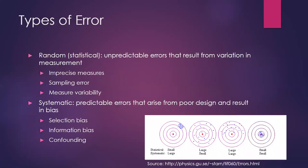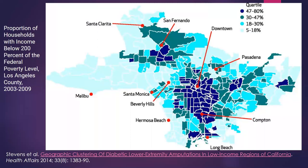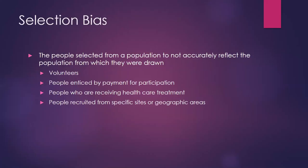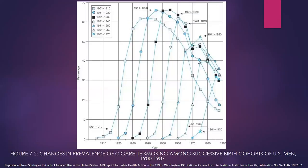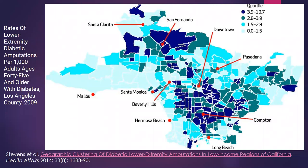I won't go through all the slides on bias and error since we've covered them before, but here's an example. This was a study looking at lower-extremity amputation among people with diabetes in Los Angeles County for people age 45 and older. Looking at the map, there's pretty clear geographic variation in amputation rates. The lighter blue indicates lower rates — areas like Malibu and Beverly Hills are in this lower range.